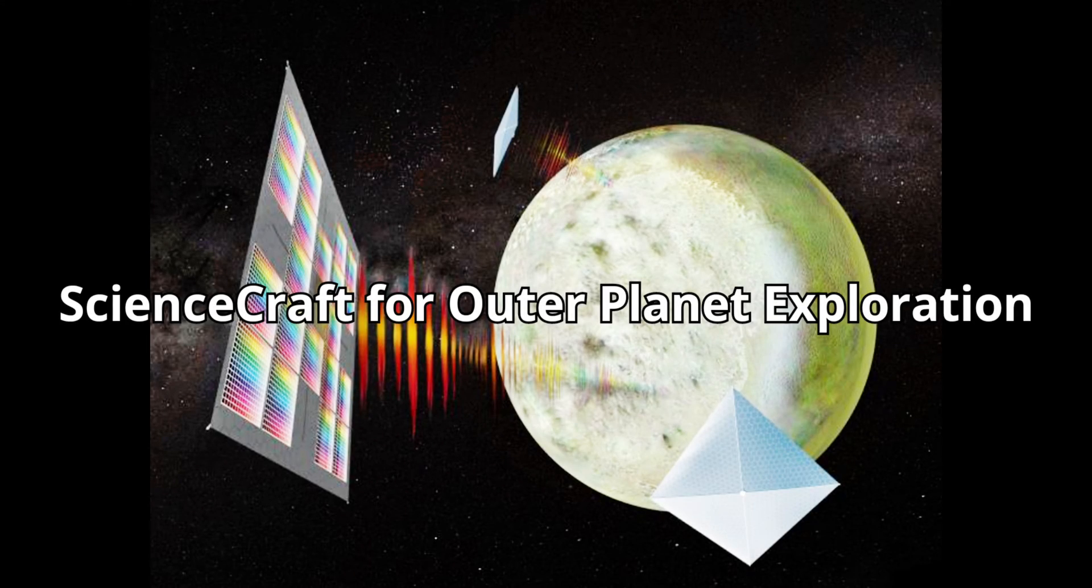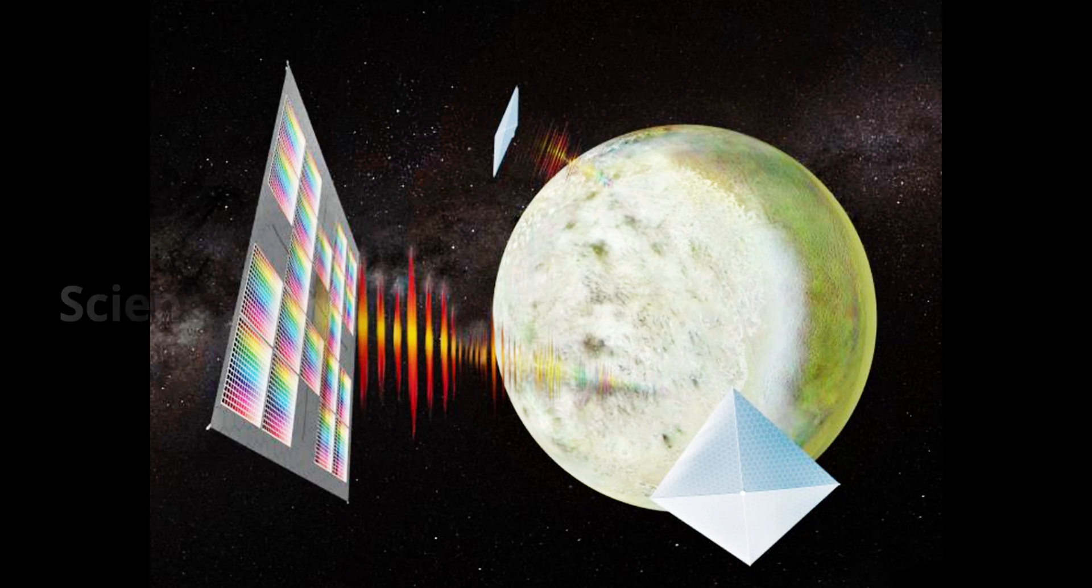NASA's own people are allowed to take part in NIAC, and that's exactly what Goddard Space Flight Center's Mahmooda Sultana did when she entered her idea for a science craft for outer planet exploration—SCOPE for short. The project aims to develop spacecraft powered by solar sails the likes of which the world has never seen.